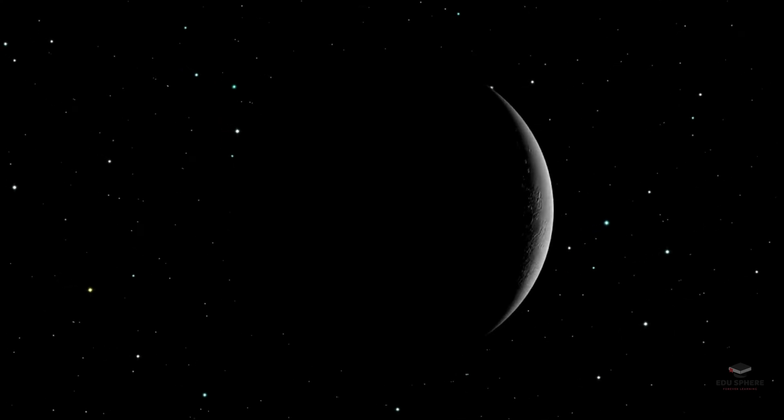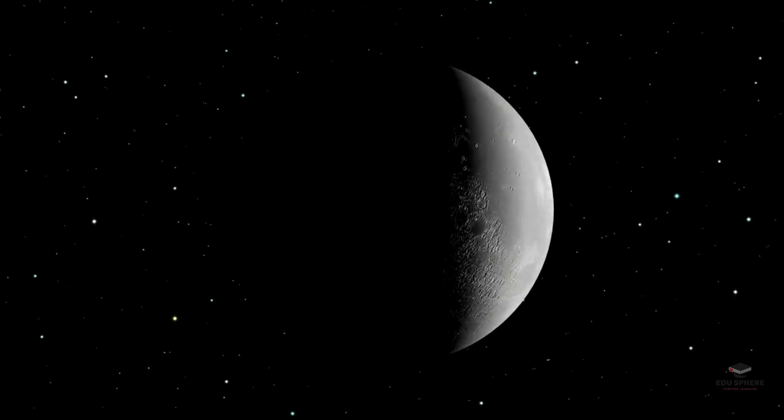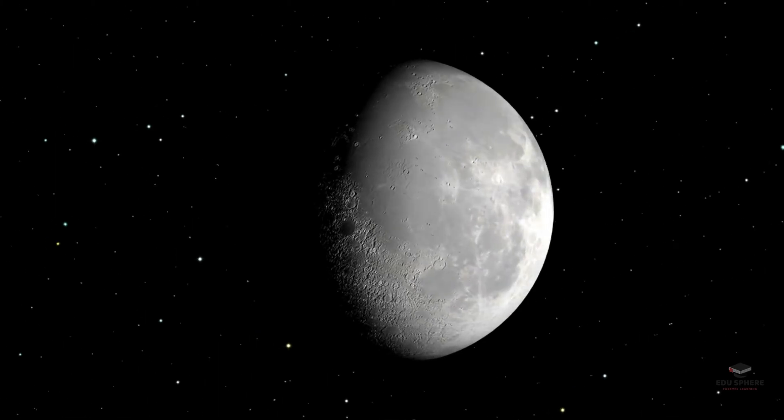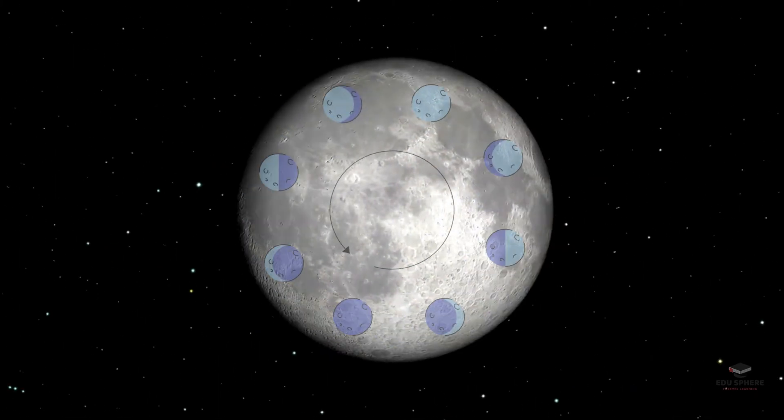When you look up at the night sky, you might notice that the moon looks a little different each night. This is due to our moon's many phases and types.